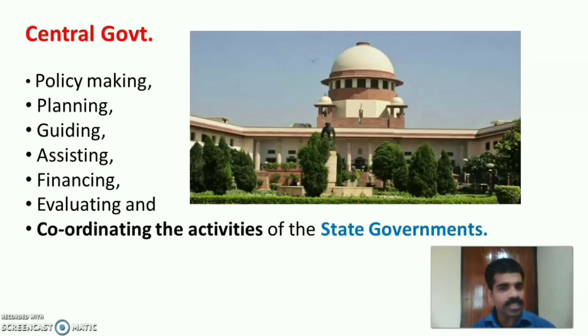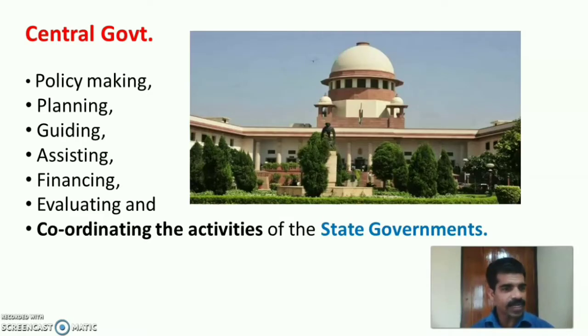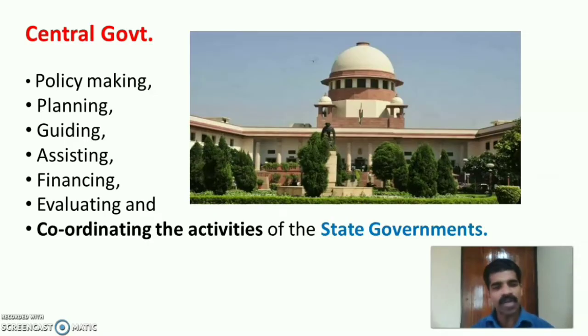The functions in relation to the health system, distributed between both centre and states, have been written in the Seventh Schedule of the Indian Constitution as three lists: Union List, State List, and Concurrent List. The main functions of the central government are policy making, planning, guiding, assisting, financing, evaluating, and coordinating the activities of the state governments.